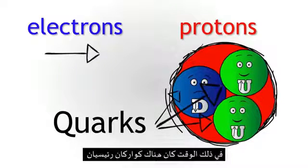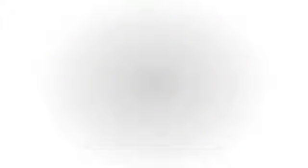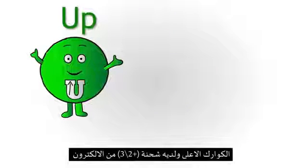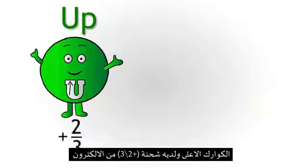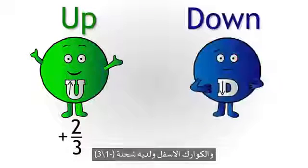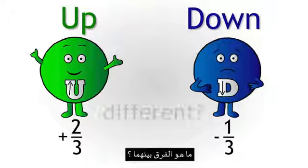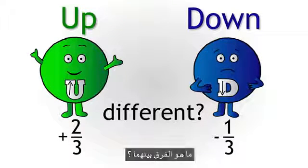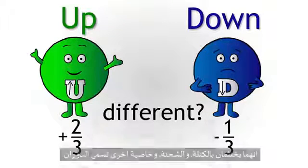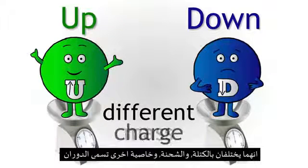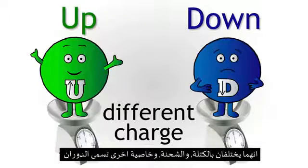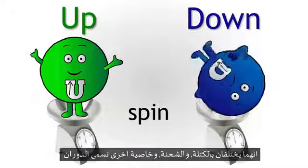At the time, there were two basic quarks: the up quark, which has a charge of plus two-thirds of the charge of an electron, and the down quark, which has a charge of minus one-third. How are they different? They all have different masses, as well as charge, and another property called spin.